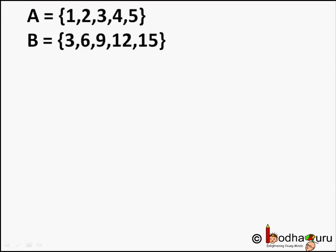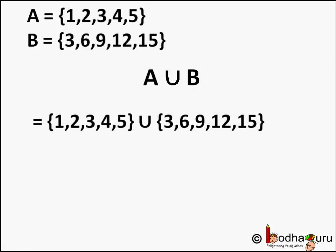Let us understand this with an example. Say set A has elements 1, 2, 3, 4 and 5, and set B has 3, 6, 9, 12 and 15. So A union B would have elements of both the sets.